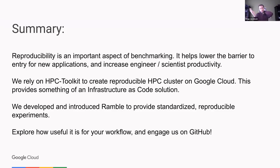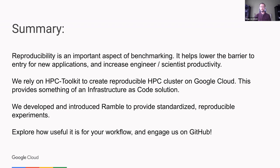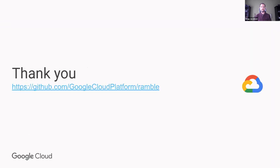So far I've talked about Ramble and benchmarking in general at Google. It's intended to help improve reproducibility and sharing benchmarks across different compute centers or with people interested in using a different application. It's what we're using currently, and we rely heavily on HPC Toolkit for our infrastructure as well. We're on GitHub — please go look at it if you're interested, feel free to submit pull requests or ask questions. Here's a link to it if you'd like to go play with it.